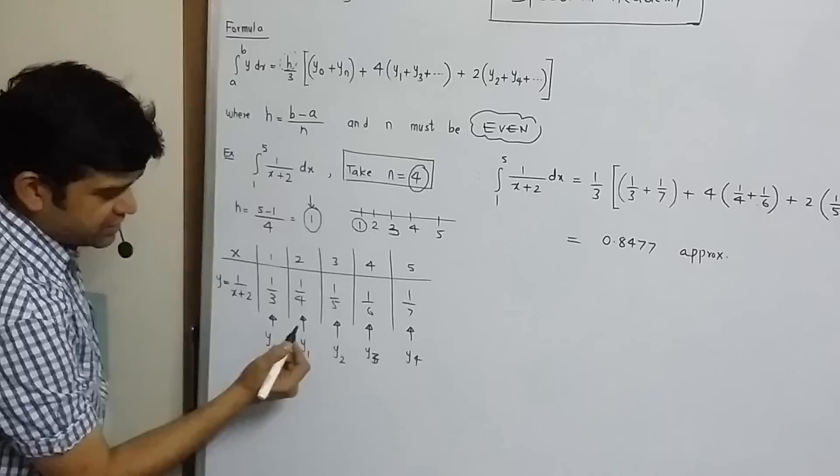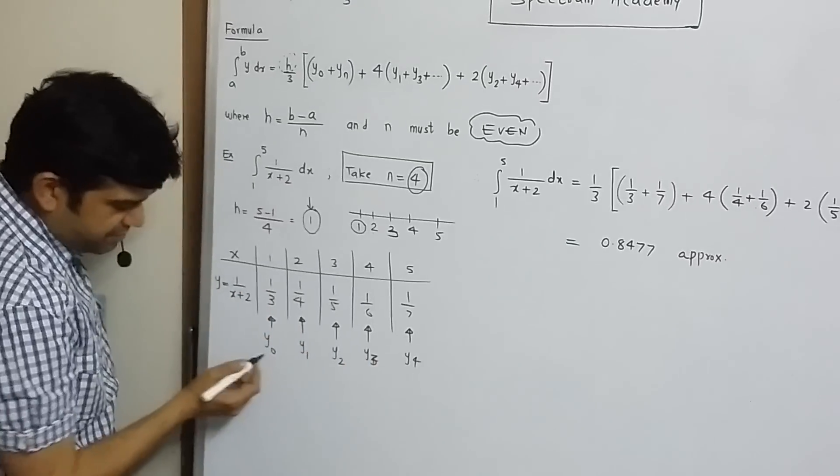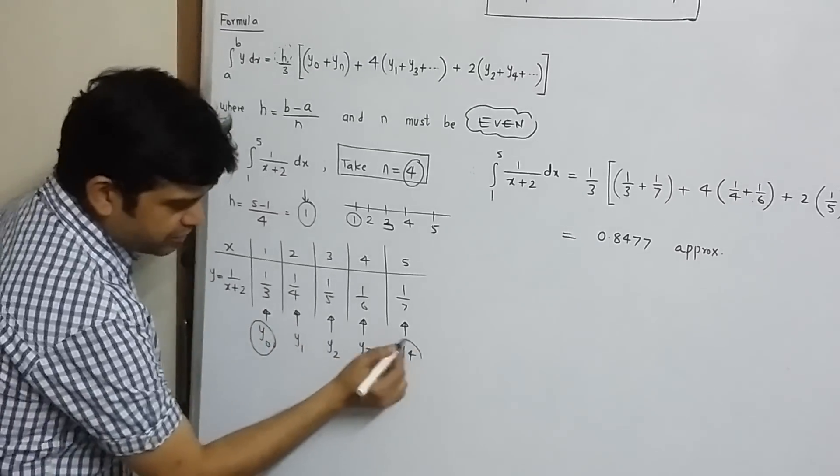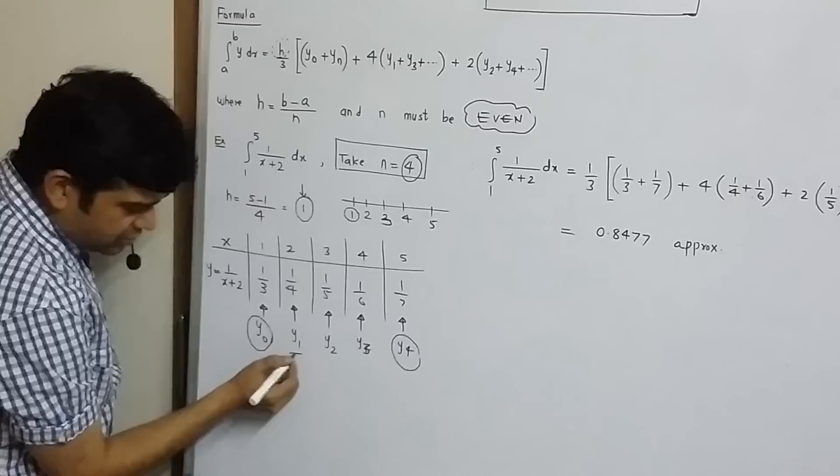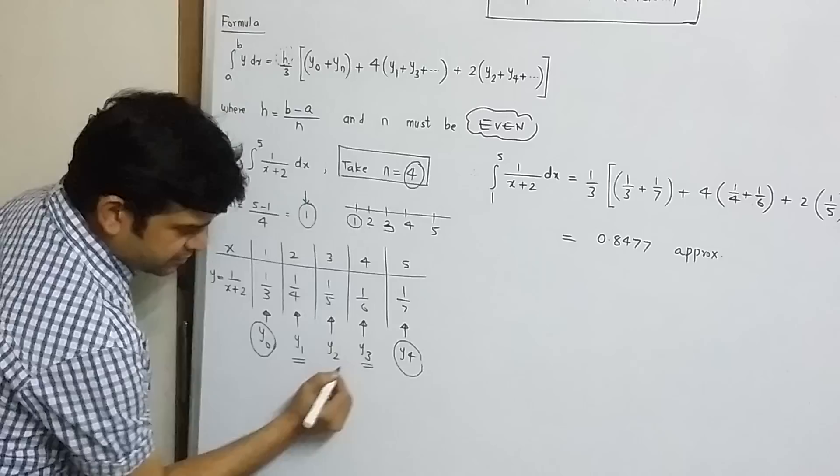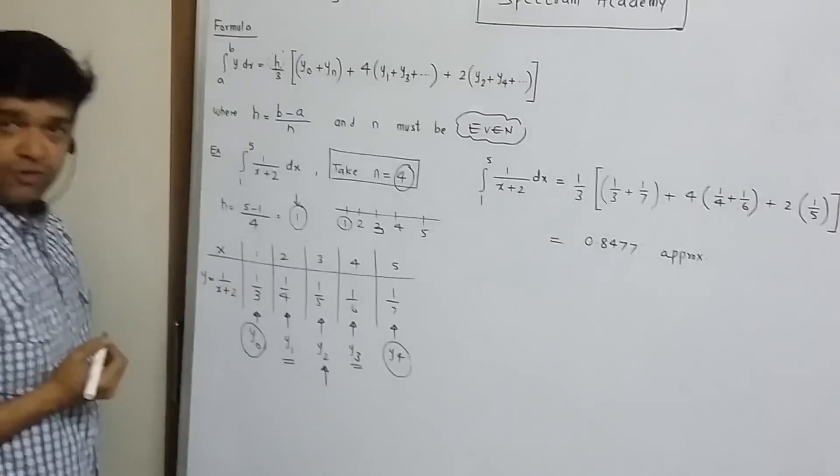Once you know these values y0, y1, y2, y3, remember these are extreme ordinates, these are odd number of ordinates and this is even number of ordinates.